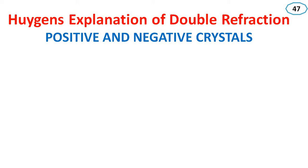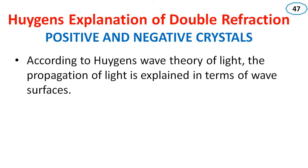Huygens' explanation of double refraction. In this topic, we are going to discuss positive and negative crystals. According to Huygens' wave theory of light, the propagation of light is explained in terms of wave surfaces.